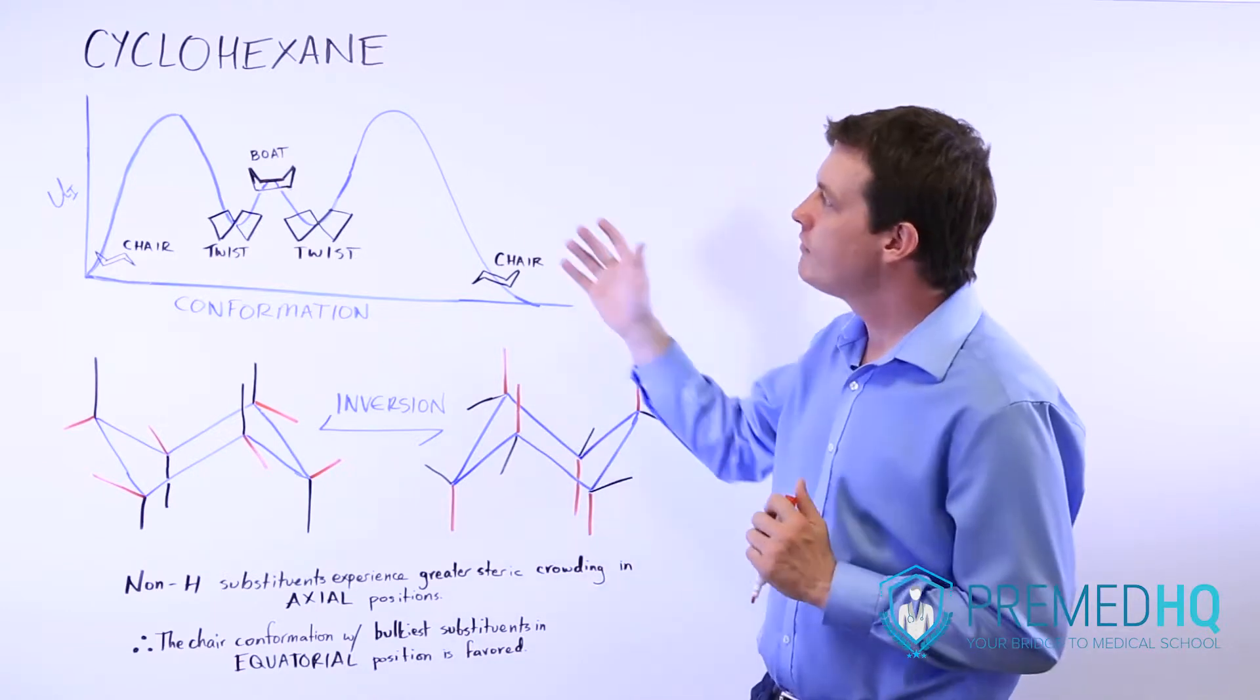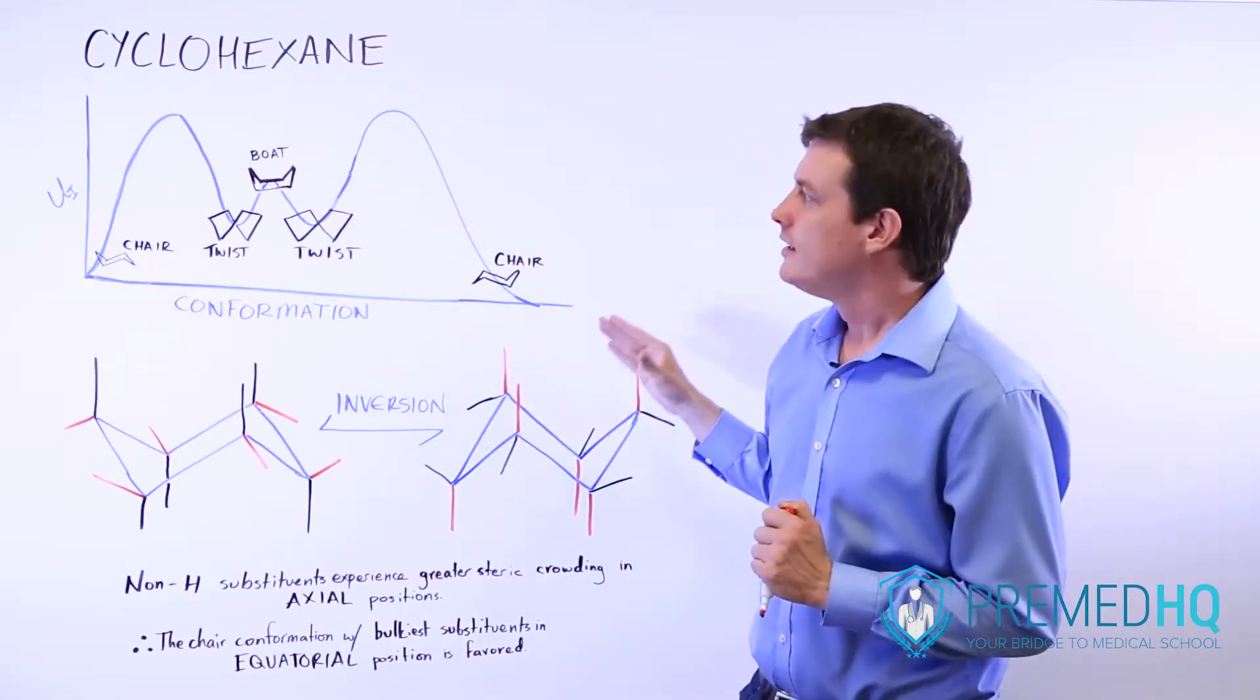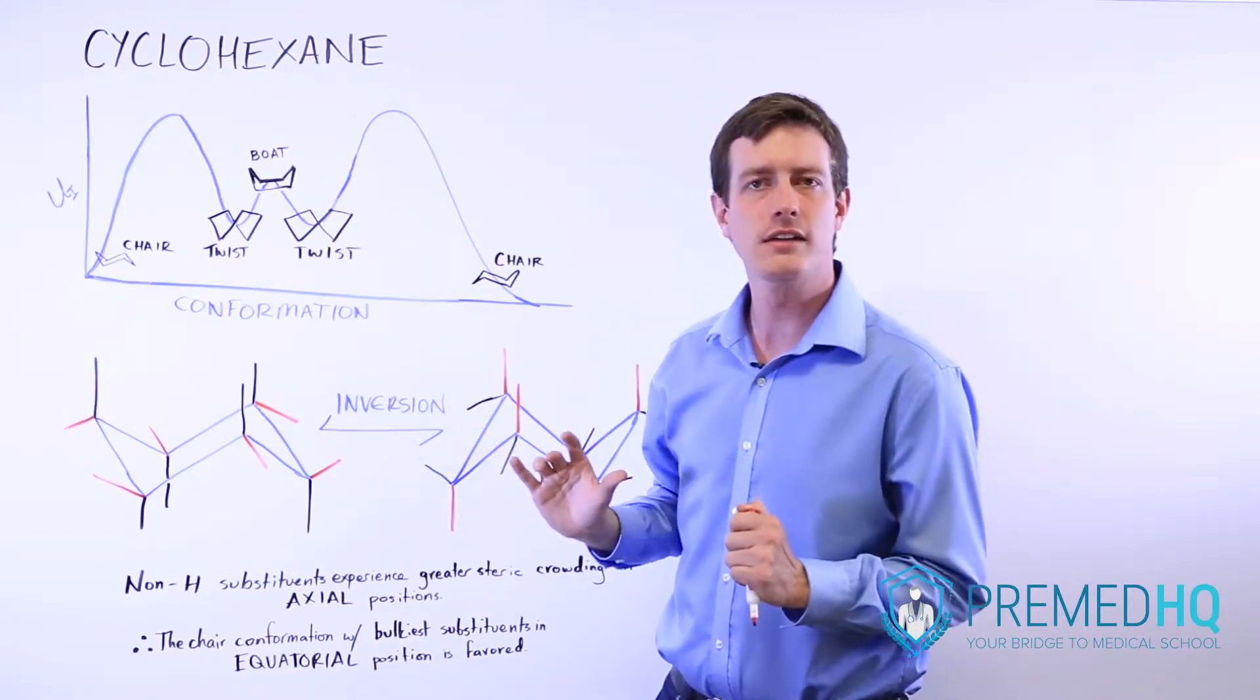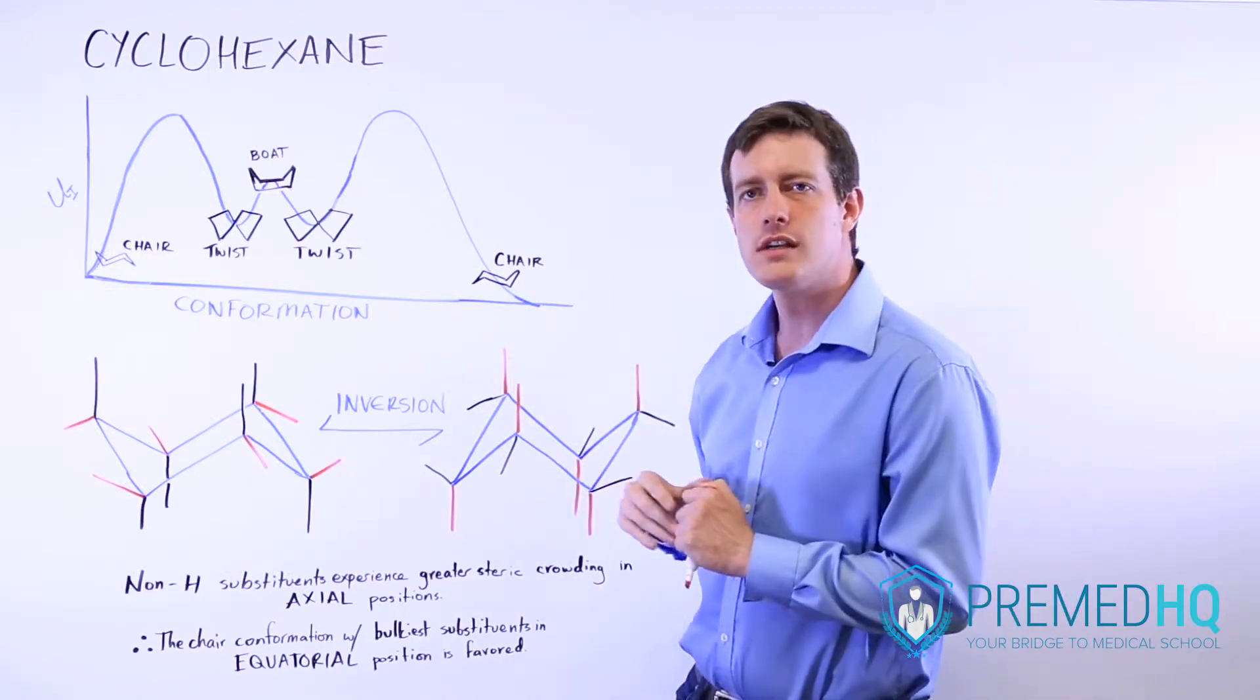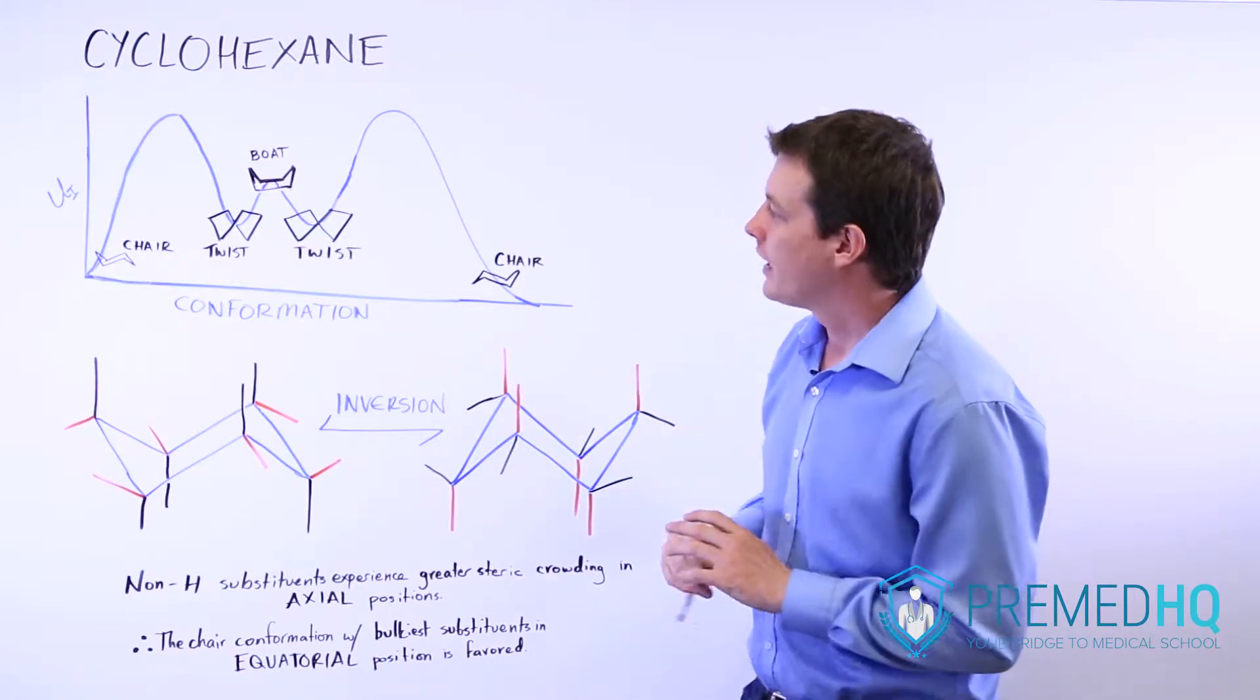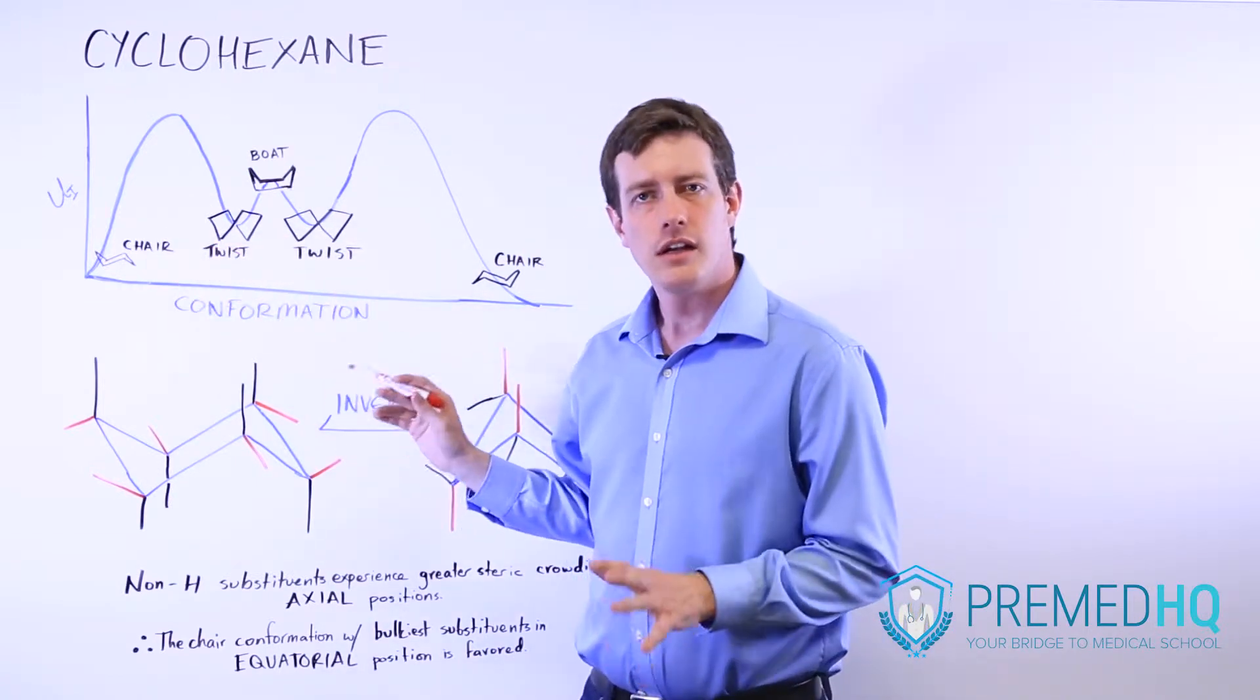And of cyclohexane, there are often several different conformations that it can take. Because there are several places where it has that ideal tetrahedral bond angle, but it can have different conformations. And it's good to be aware of which ones have the lowest potential energy overall. The chair conformations are the ones that have the lowest ring strain overall.